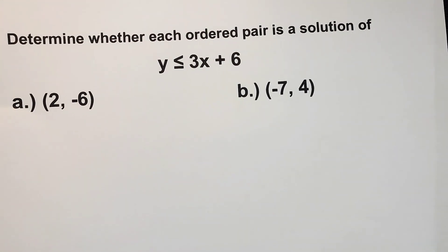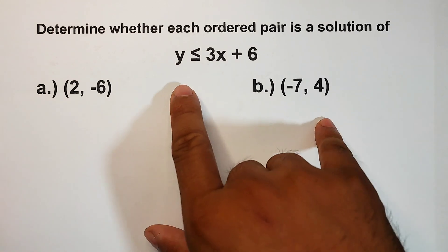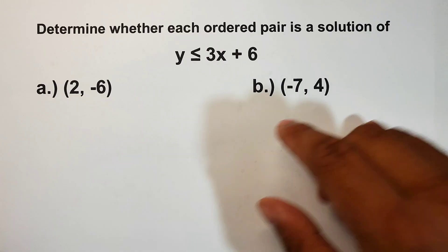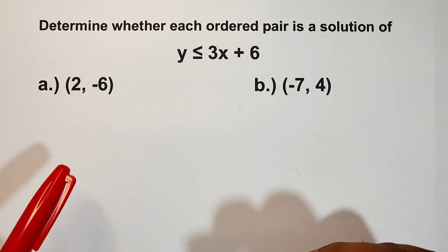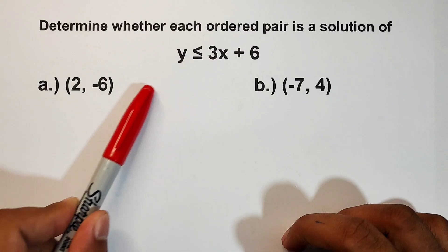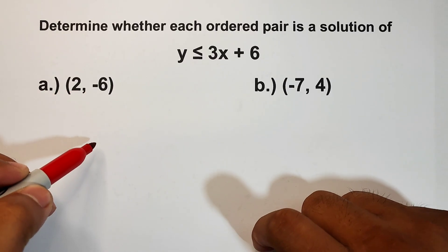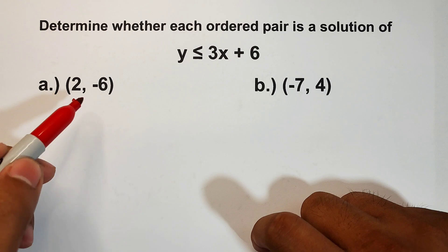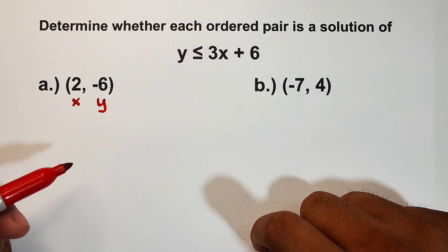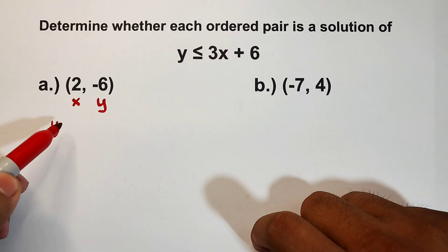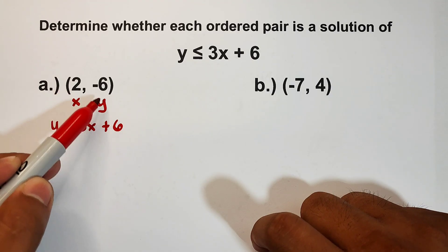In the next part of our video, we will determine whether a pair of solutions is a solution of the inequality y is less than or equal to 3x plus 6. To determine whether an ordered pair is a solution of a given inequality, we need to evaluate the inequality using those values. For an ordered pair (2, -6), the 2 represents x and negative 6 represents y.